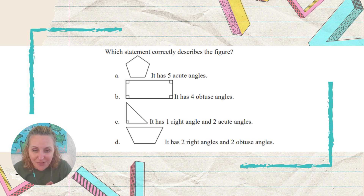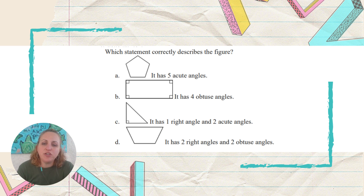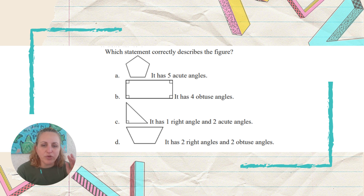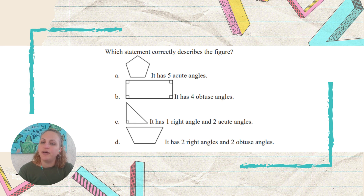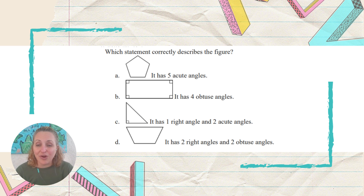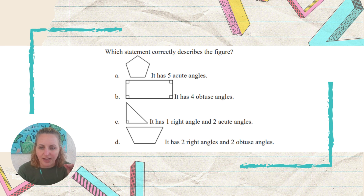This next question is a sample from your FAST practice materials — similar to what you might see on the FAST test. We're looking at different angle types: acute, obtuse, and right. The question asks which statement correctly describes the figure, so your answer has to be accurate. Go ahead and hit pause, think carefully about what each answer choice is saying, and see if you can figure it out before I go over it.